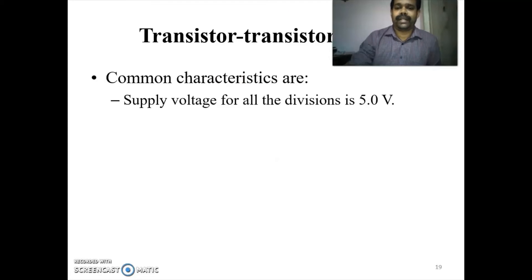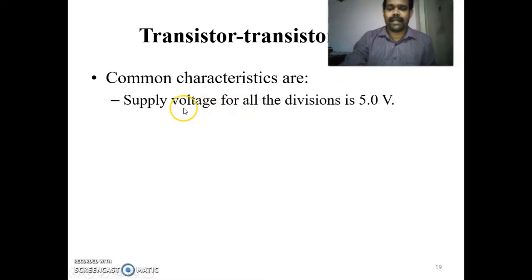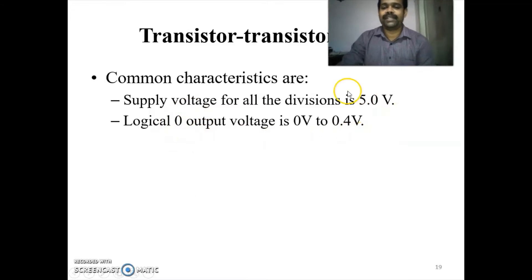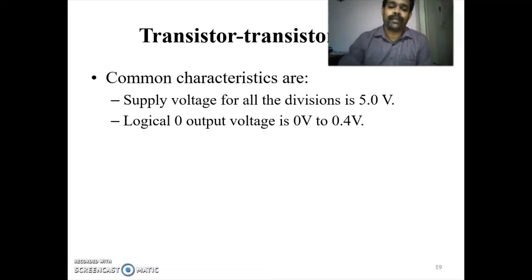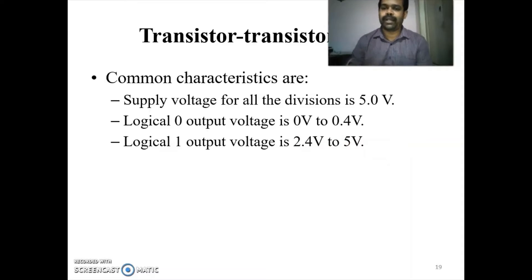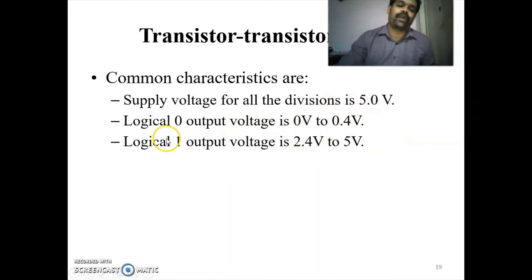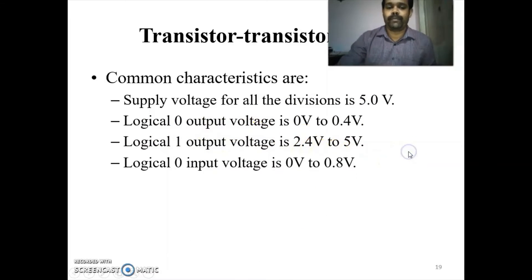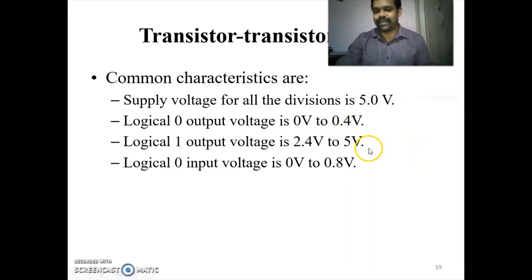The common characteristics of TTL: supply voltage is 5 V. For logical zero, output voltage is 0 to 0.4 V. For logical one, output voltage is 2.4 to 5 V. For logical zero input voltage is 0 to 0.8 V.